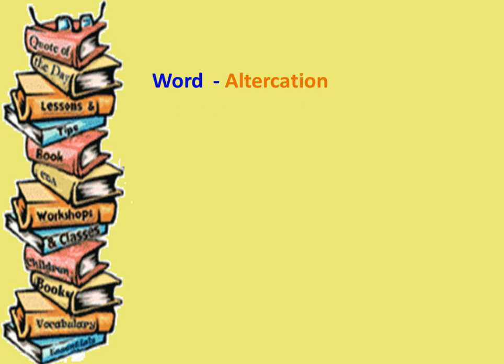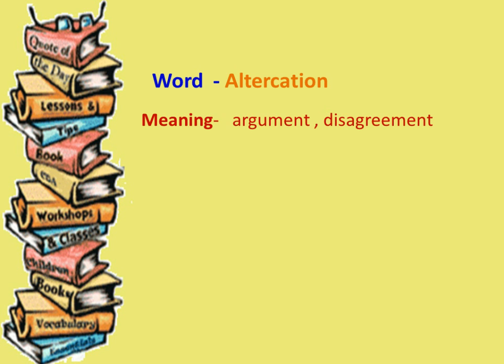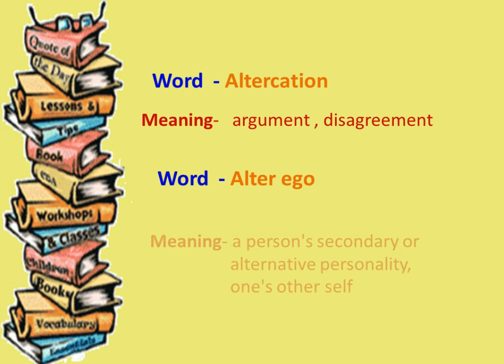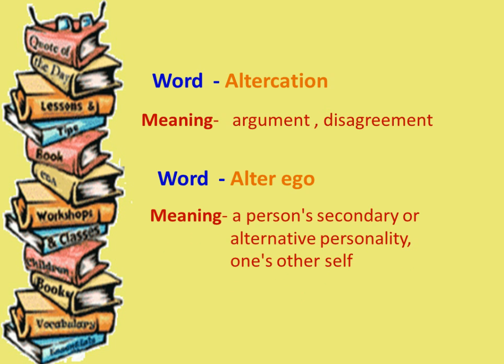The next word is 'altercation' and its meaning is argument or disagreement. The next word is 'alter ego' and its meaning is a person's secondary or alternative personality, or one's other self.